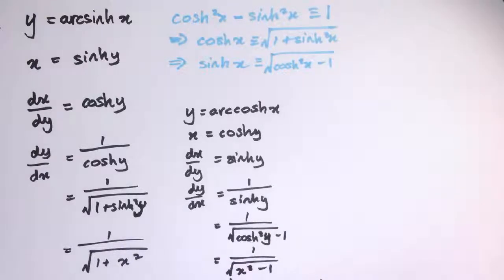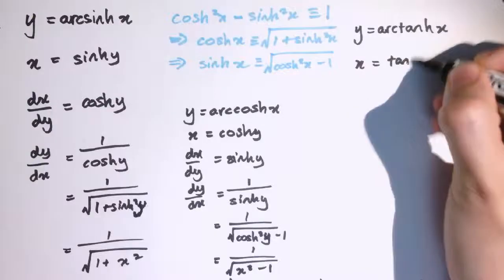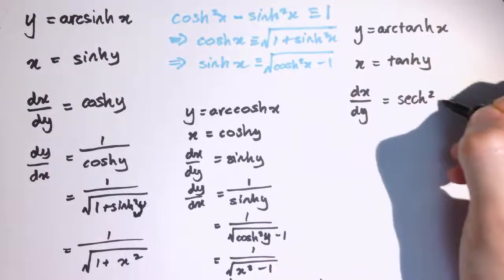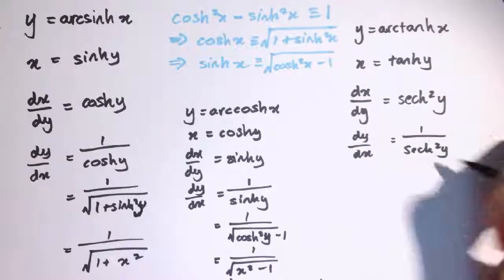Very similar for y equals arc tanh of x. We write it as x equals tanh y, so dx by dy is cosh squared of y, and dy by dx is 1 divided by cosh squared of y.